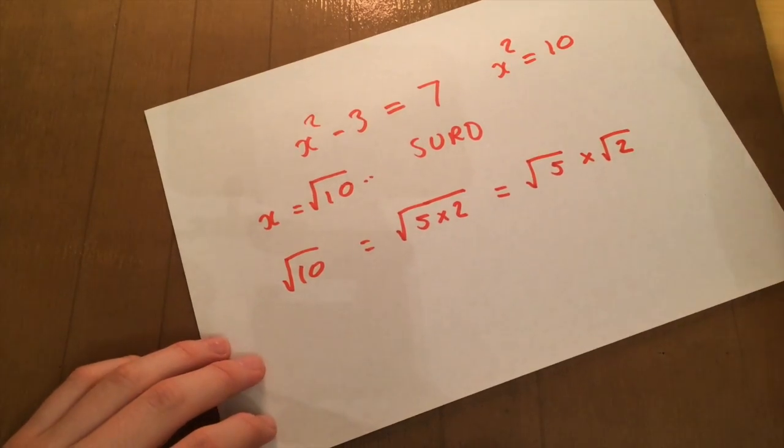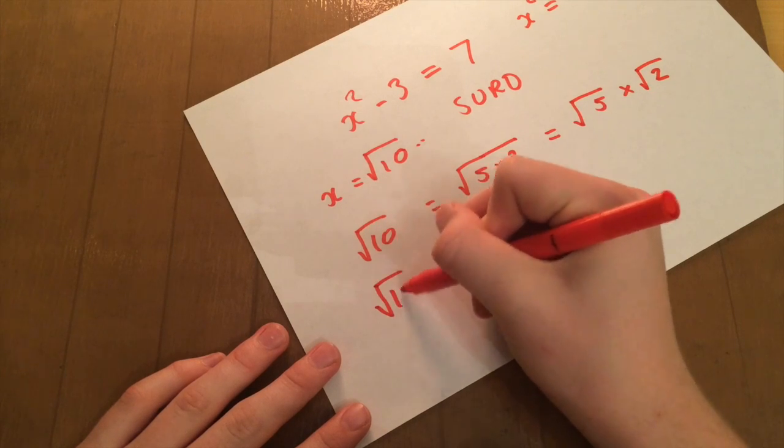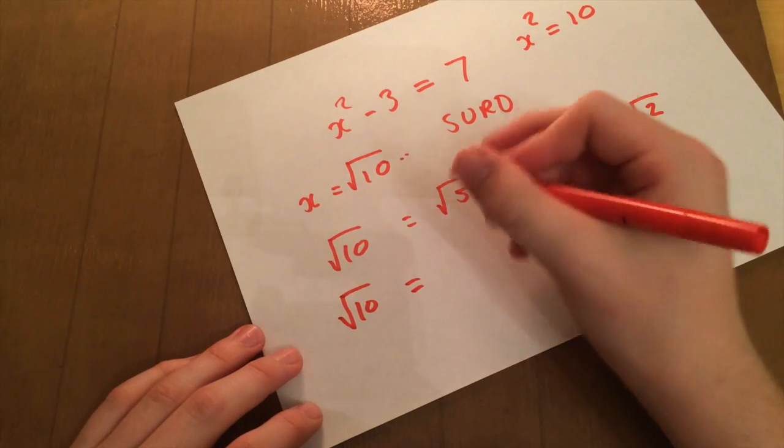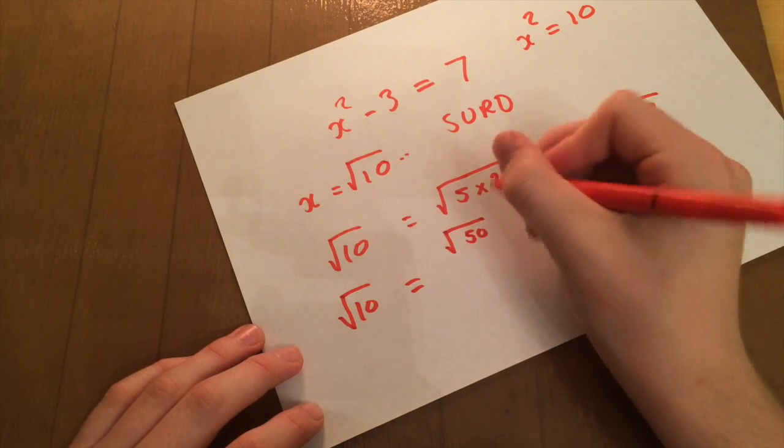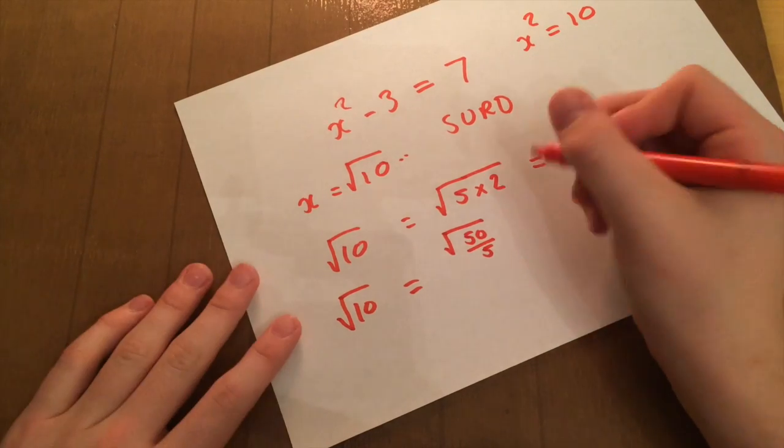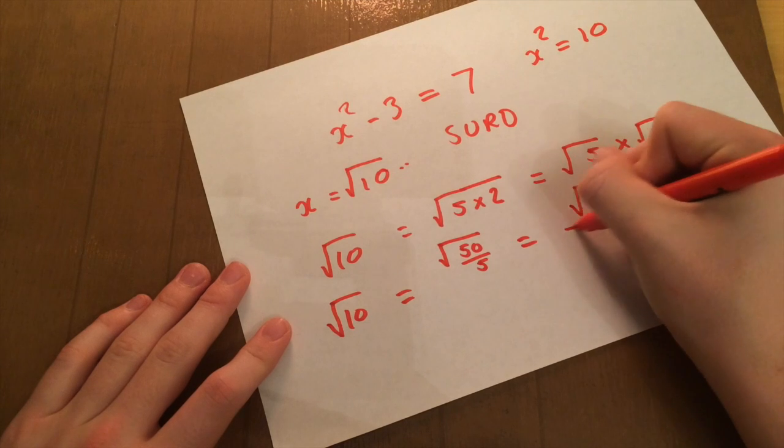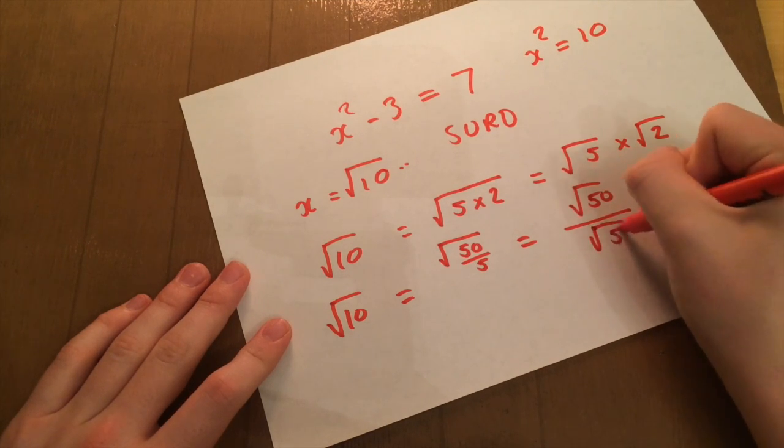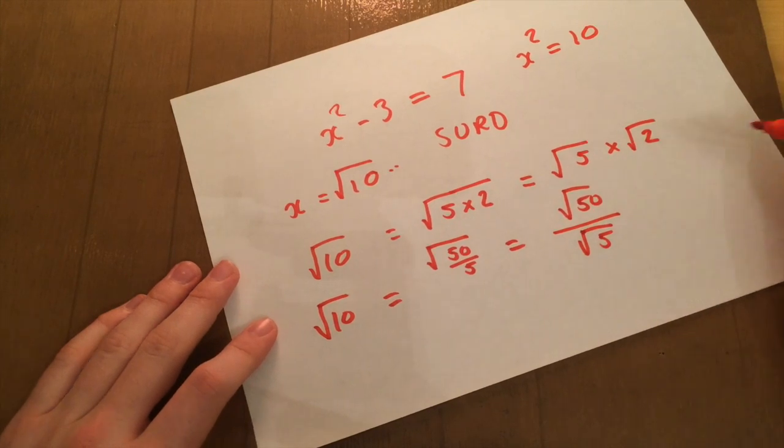So it's another way of simplifying things. The other way of doing it would have been if we went root 10, that is the exact same as saying root 50 divided by 5. Because obviously 50 divided by 5 is 10. But you can also write that as root 50 over root 5. And once again, if you had another root 5, you could times this out and take it over to it.